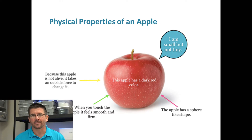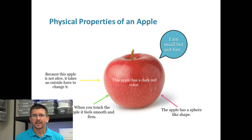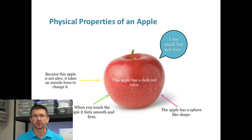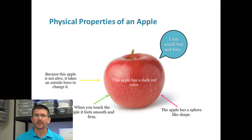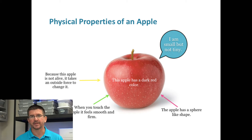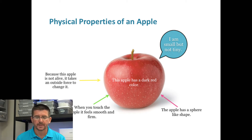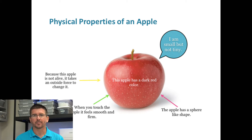Here we see on this graphic the example of physical properties of an apple. When we describe the physical properties of an apple, again, it's what do we see as we look at it — as we observe it without changing that apple. So we could describe things like the size of the apple, the mass of the apple, the shape of the apple, the color. All of those are examples of physical properties.